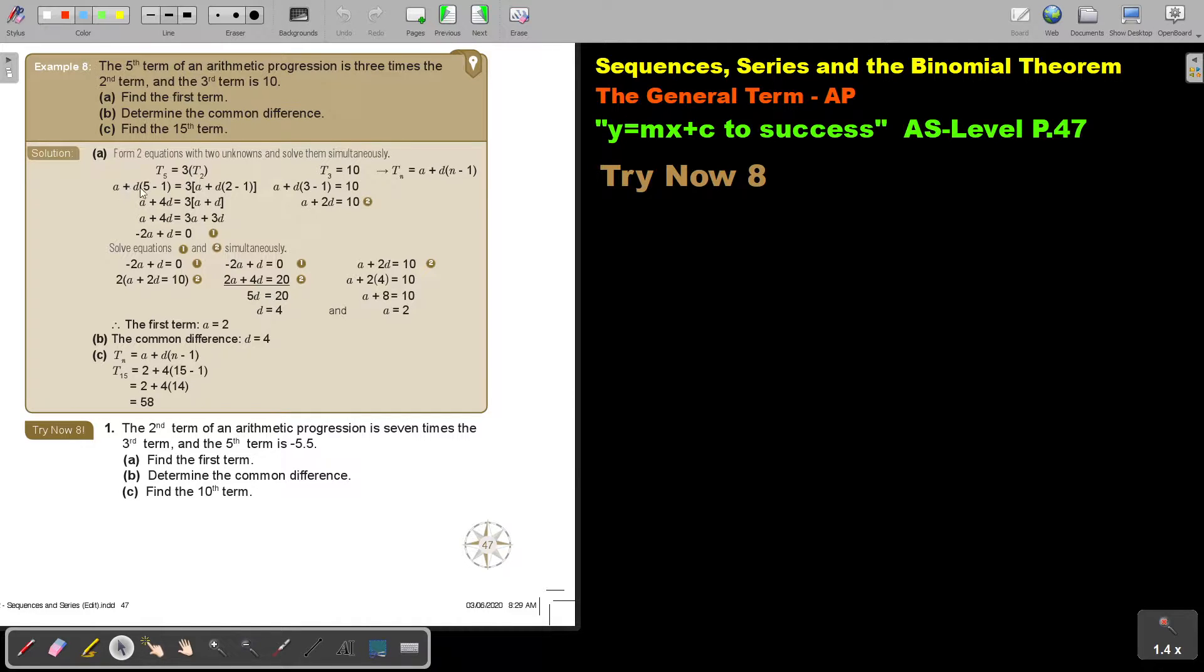And now basically I'm just filling everything in. So I fill in the five there, there's the three in front, I fill in the two there and I do the same. And again I form two equations. Why? Because there's two variables, A and D. I solve it simultaneously.